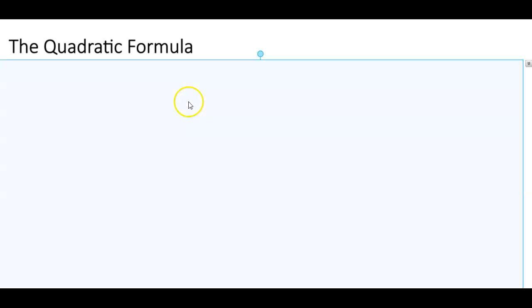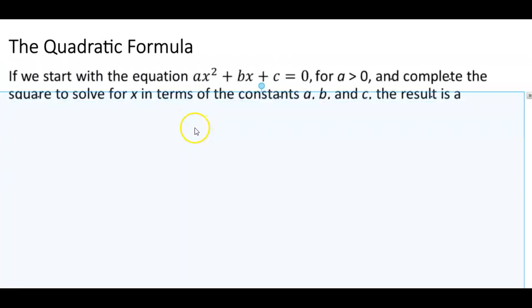The quadratic formula. If we start with the equation ax² + bx + c = 0 for a > 0 and complete the square to solve for x in terms of the constants a,